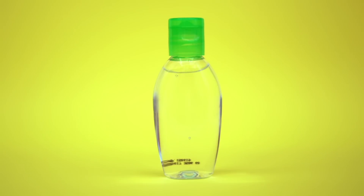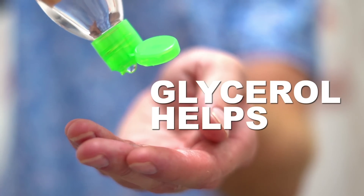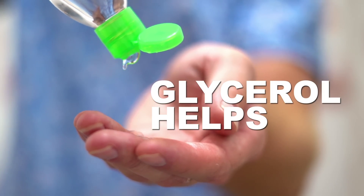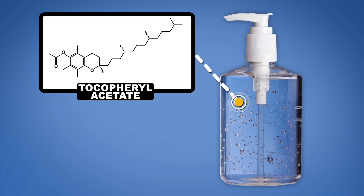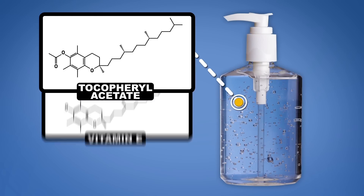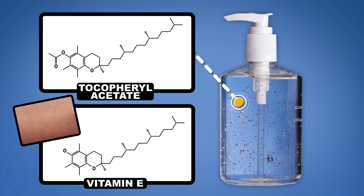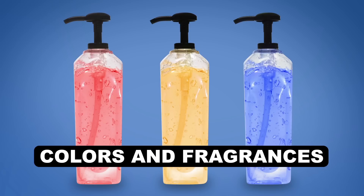While alcohol is all you need to kill germs, it's not all that goes in there. Ethanol and isopropanol can dry out your skin, so glycerol helps counteract that effect, as do a host of other additives. Manufacturers might include tocopherol acetate, a molecule very similar to vitamin E that also happens to be great for your skin, and some familiar stuff like aloe.